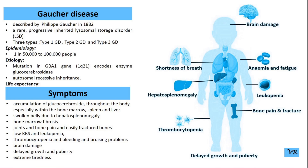Gaucher disease is caused by mutations in the GBA gene, which provides instructions for producing the enzyme glucocerebrosidase. Gaucher disease is inherited in an autosomal recessive pattern.